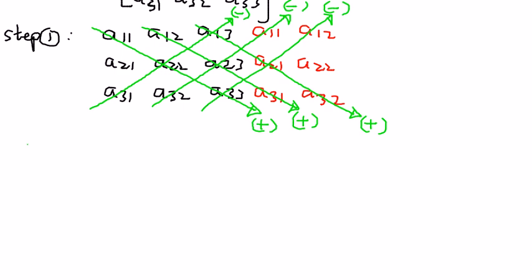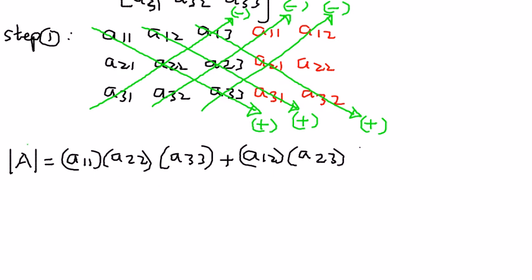So the determinant of A, matrix A, we can write this one out as follows. This is going to be A11 times A22 times A33. And then we're going to add the product of those three elements in that diagonal there, which is A12 times A23 times A31. And then plus A13 times A21 times A32.